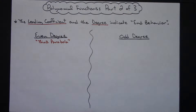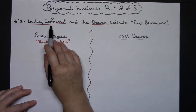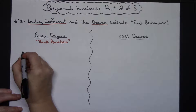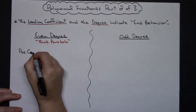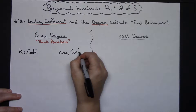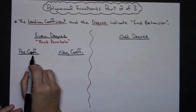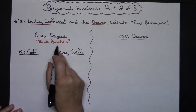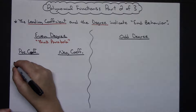Within that even degree, you're going to look at the leading coefficient, and that coefficient is either going to be positive or negative. If you have a positive leading coefficient, think about the parabola — that means it's going to be an upright parabola, so your end behavior is going to be up, up.